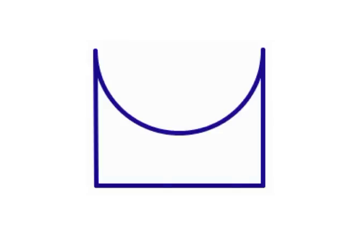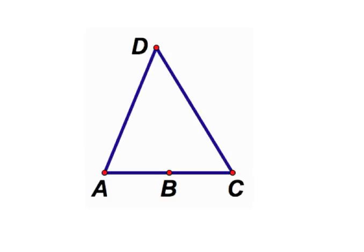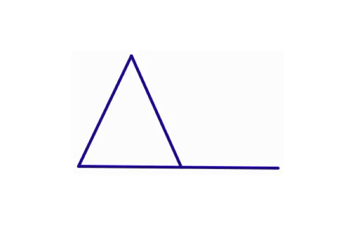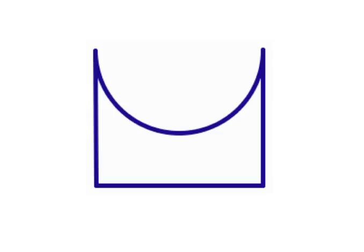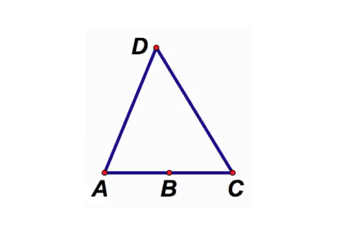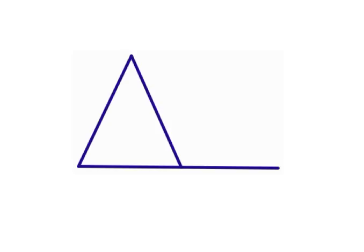A polygon is a closed figure with three or more co-planar segments called sides. Two sides with the common end points are non-collinear. Each side intersects exactly two sides, but only at the end points.